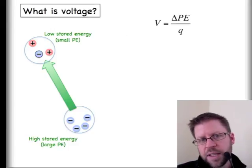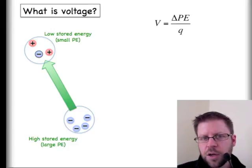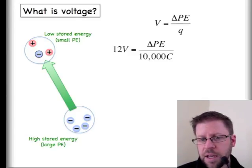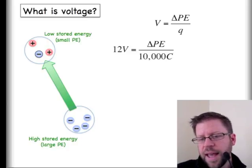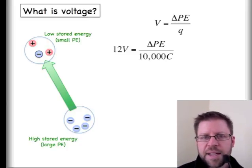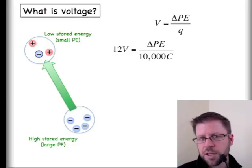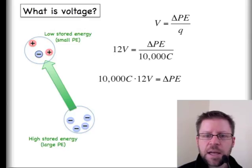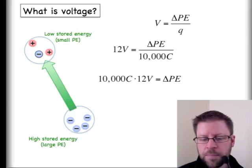If I plug in some quick numbers for us to take a closer look, we can say perhaps 12 volts - that might be a fairly standard battery - is equal to, I will solve for the change in potential energy, and I'm picking this number out of the air. I'm saying that perhaps this battery has the ability to effectively store 10,000 coulombs of charge.